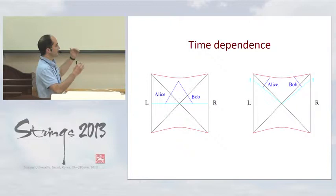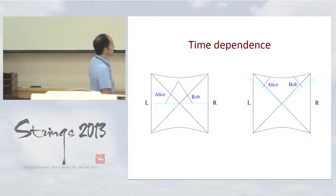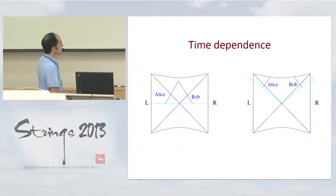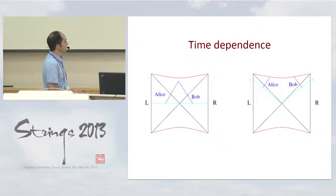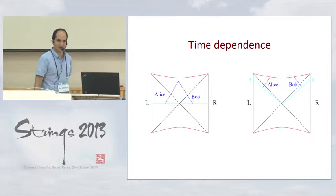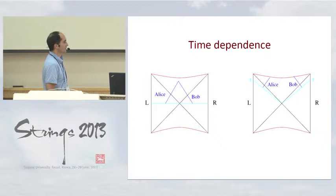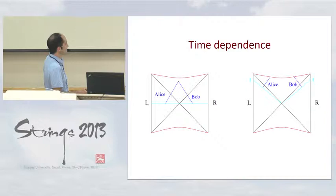Notice that if we evolve in time into the future, this geometry has a certain isometry: boosts around this point. So we can evolve forward in time on one side and backwards in time on the other, and that is an isometry. However, in the wormhole interpretation we'd like to evolve forwards in time on both sides. When we do that, the geometry looks time dependent. For example, if Alice and Bob decide to jump at t equal to zero, then they meet. If they decide to jump at a later time, they will not meet.